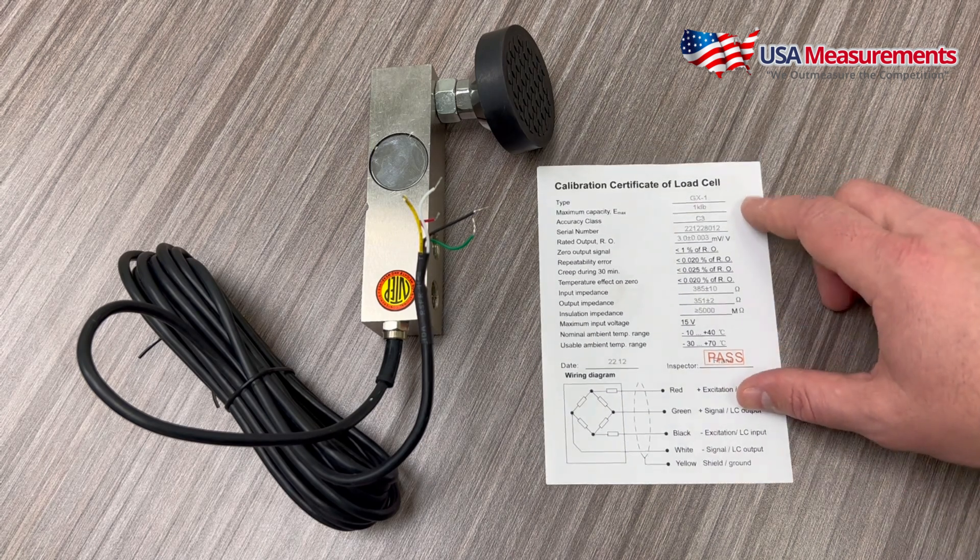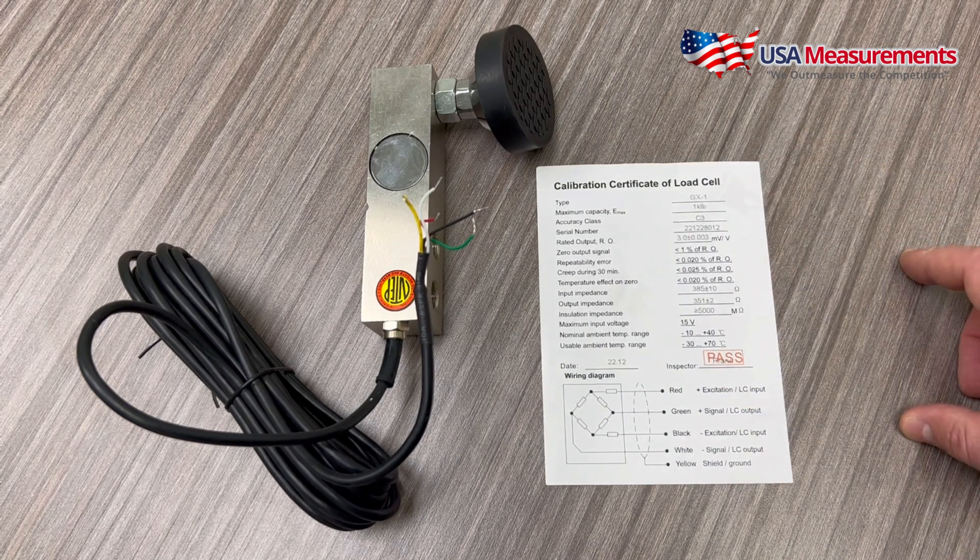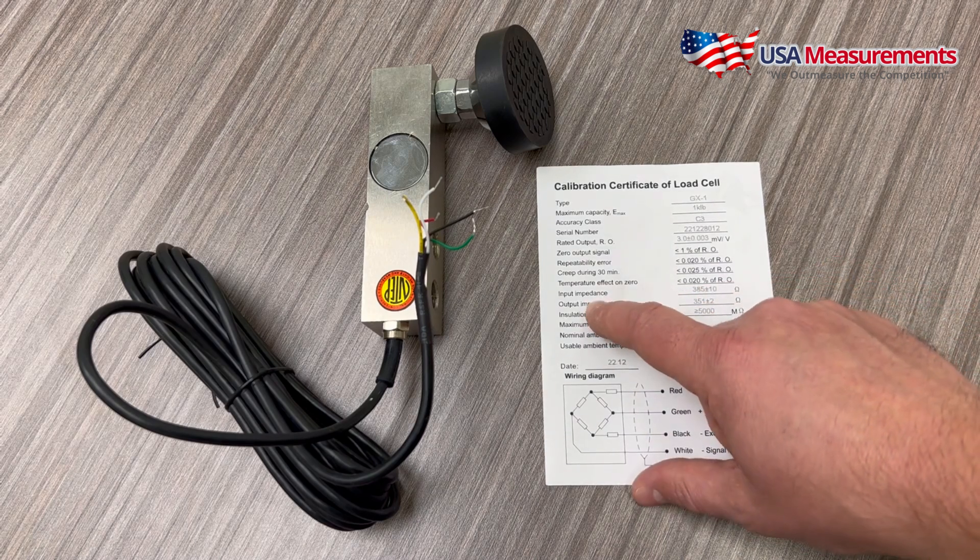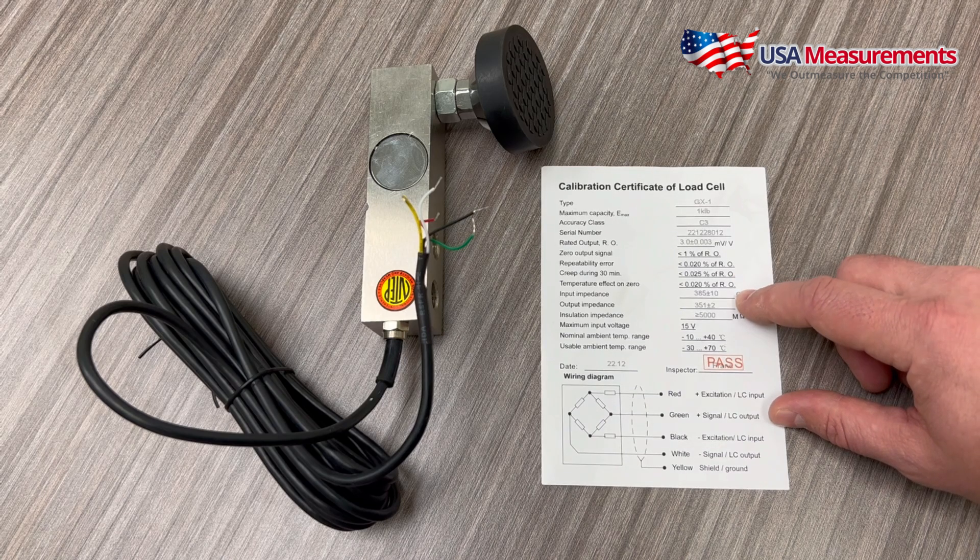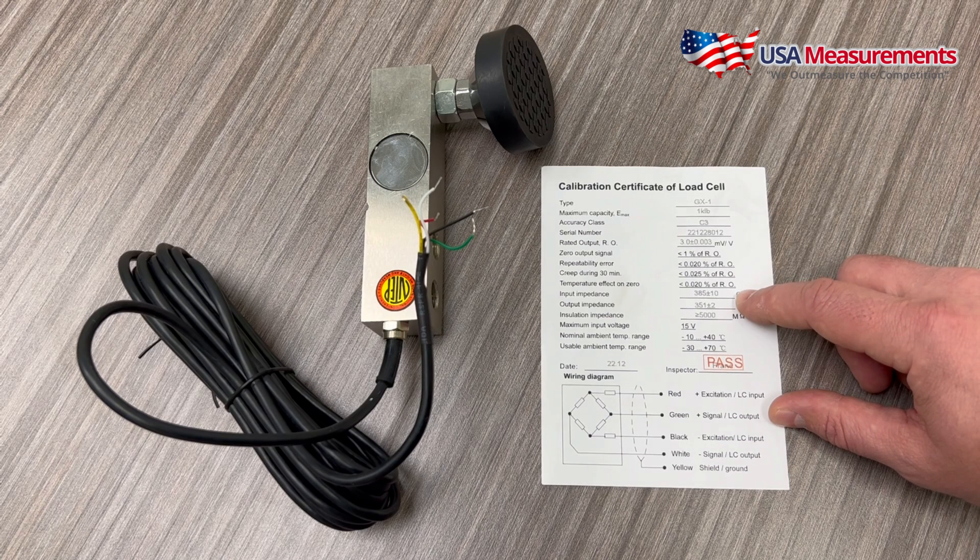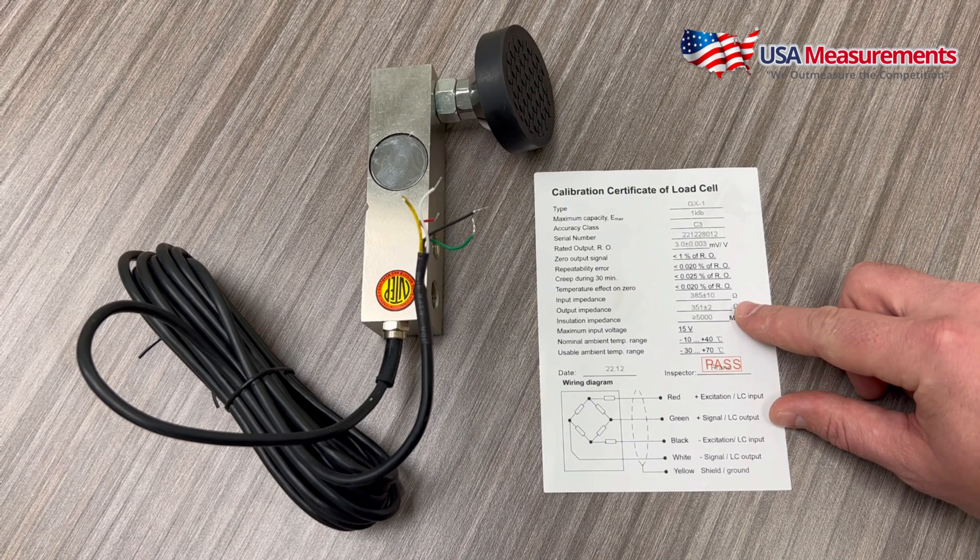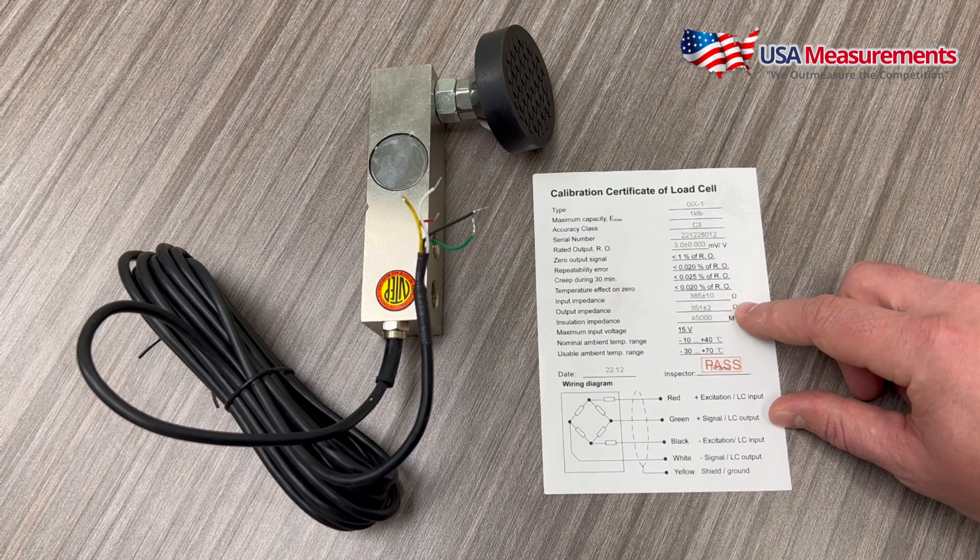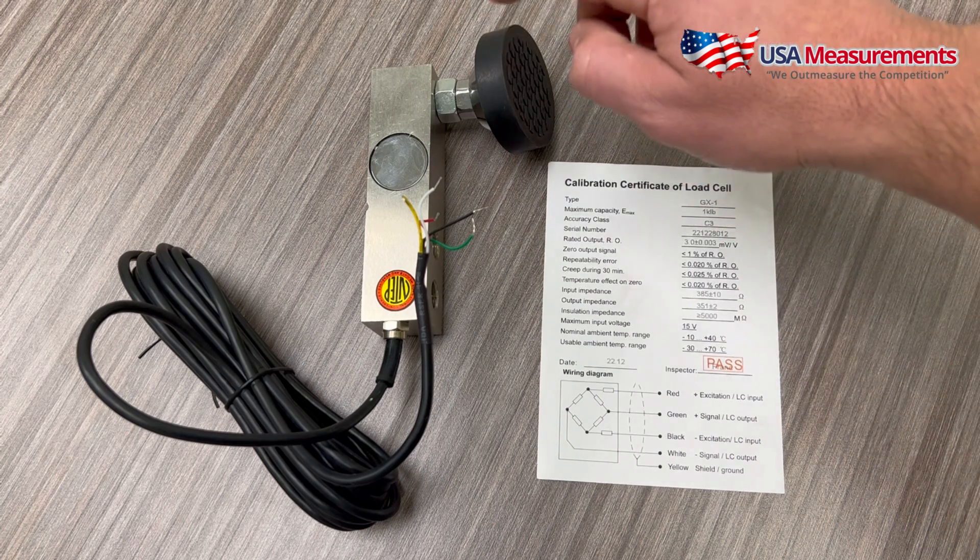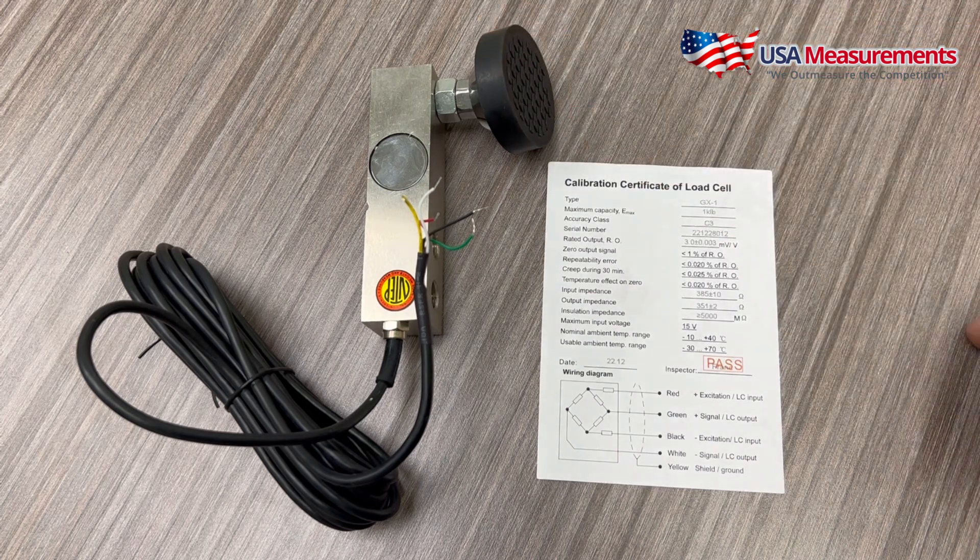Now first, if you have a calibration certificate, this will be helpful to tell us what the input impedance and output impedances of the load cell are. So the input impedance is 385 with plus or minus 10 ohms, and the output impedance is 351 with plus or minus 2 ohms. Now standard shear beam load cells for a floor scale